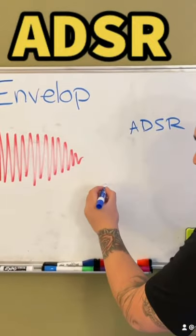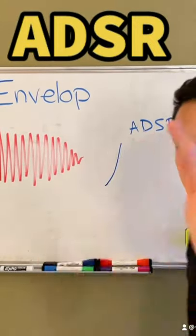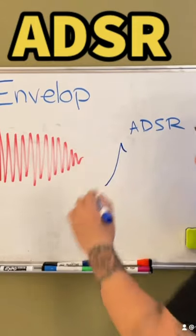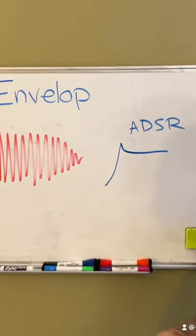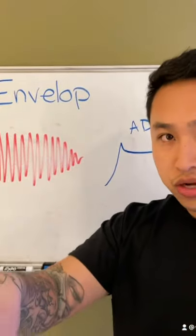Attack is how much time before it reaches the peak volume. Decay is when that peak volume starts falling. Sustain is how long it's holding out at that level as long as you're holding the note.